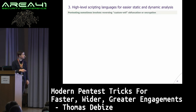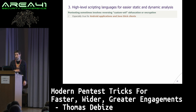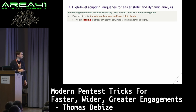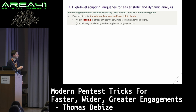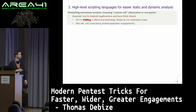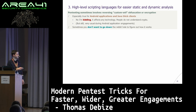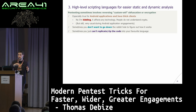Third trick: sometimes you have to reverse some custom obfuscation or encryption scheme in whatever application you're auditing. This is especially true for Android and Java, but it affects any technology — people do not understand crypto. For example, Oracle WebLogic Server encrypts passwords with a specific scheme — at the time, there was no Python module supporting this because Oracle WebLogic uses Bouncy Castle in Java, and there was no equivalent Python crypto module. So you need to live off the land and use the native code.